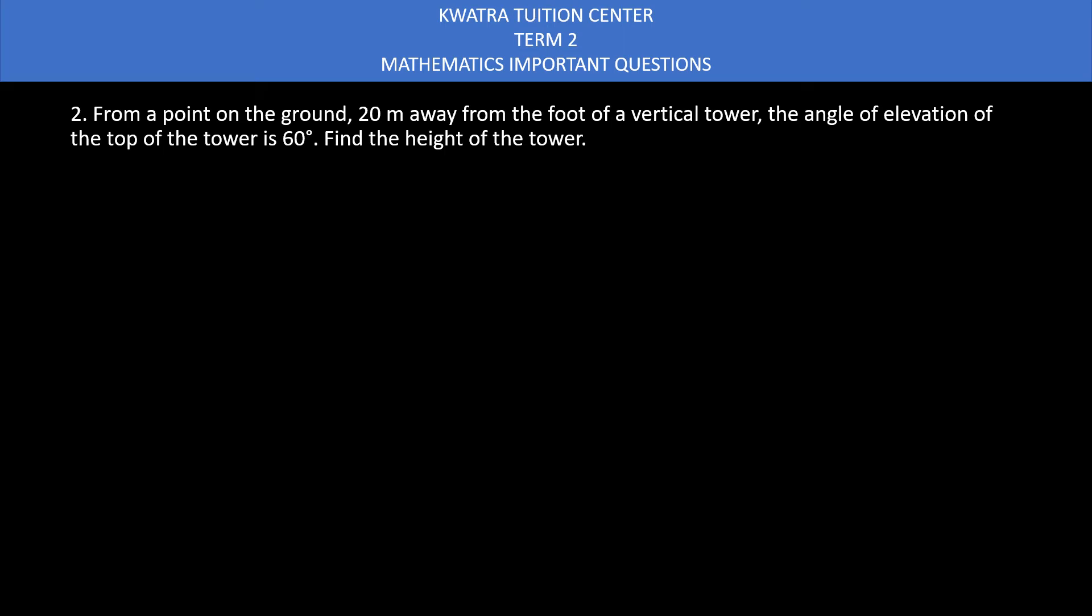Let's start with the second question. It says from a point on the ground, 20 meters away from the foot of a vertical tower, the angle of elevation of the top of the tower is 60 degrees. Find the height of the tower.